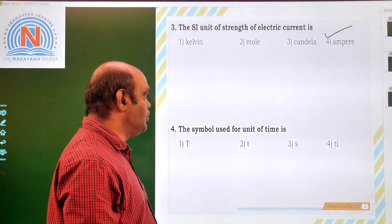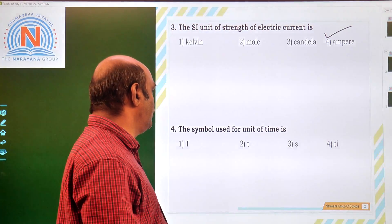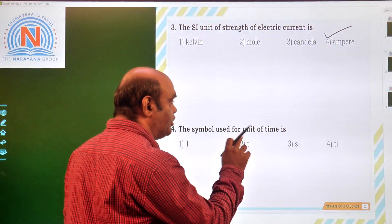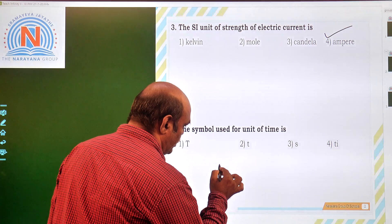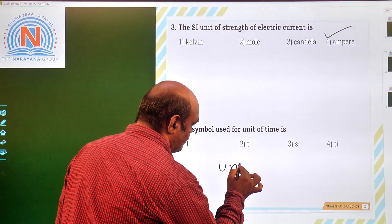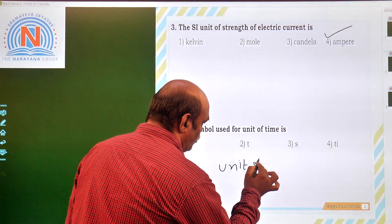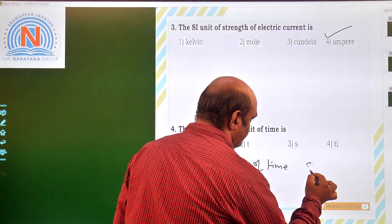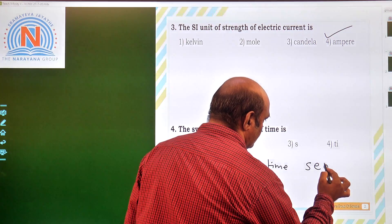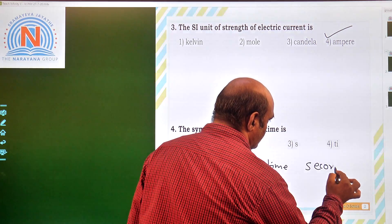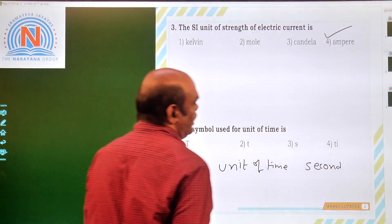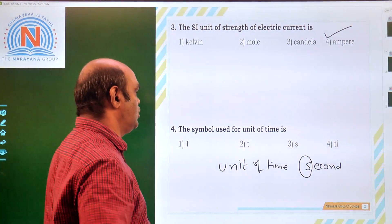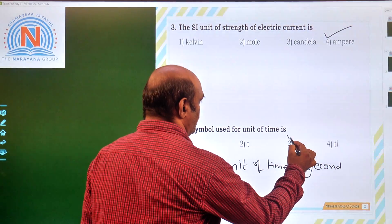Next: the symbol used for the unit of time. The unit of time is second, and its symbol is represented as S. So the answer is the third option.